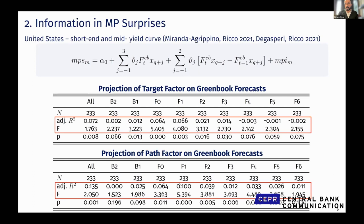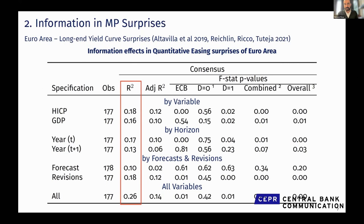Something you can do is run a regression of monetary policy surprises onto the Green Book forecasts and updates of the Green Book forecast from one month to the following one. Under full rational expectations, the correlation should be zero — all coefficients in front of the Green Book forecast should be zero. However, we find these coefficients are not zero. The R-squared is around 7% for the target factor, not huge, but up to 10% for the path factor. This information component holds across central banks — South Africa, the Euro area, and the United Kingdom.